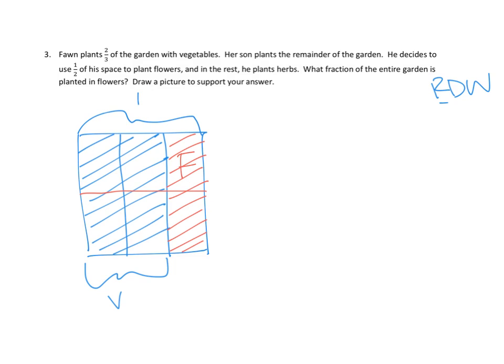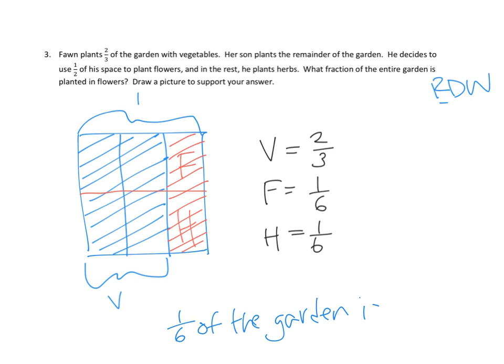And he decides to use one half of his space to plant flowers. Okay. Big F there. And the rest, he plants herbs. H for herbs. Right? So now we know there's vegetables in these two-thirds. There's flowers in this part. How big is that? Oh, that's one out of one, two, three, four, five, six. One out of six. So one-sixth. And then there's herbs in also one-sixth. So it looks to me like, I'm just going to do a quick summary on the side. Vegetables equals two-thirds. Flowers equal one-sixth. And herbs equal one-sixth. And which one were we interested in? What fraction of the entire garden is planted in flowers? Oh, right. I would say one-sixth of the garden is flowers.